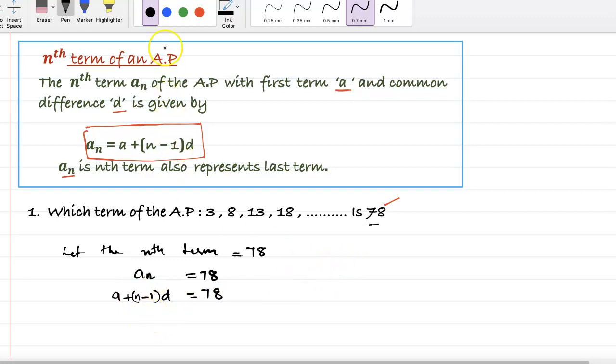So here a is the term 1, that is 3. And the common difference we know how to find: term 2 minus term 1. So here 8 minus 3 is 5.